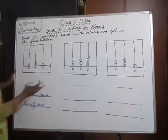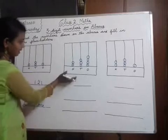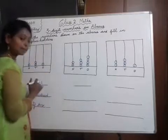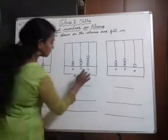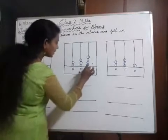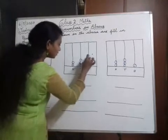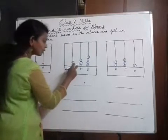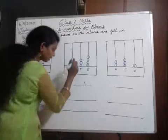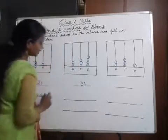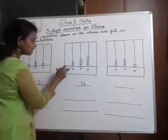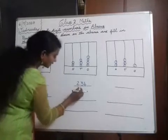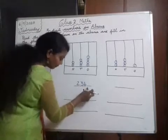Same, we have to do the next one also — the next Abacus. After seeing the Abacus, you have to write the number and the number name. First, in the 1s place, how many balls are there? 4. Write 4. Next, in the 10s place, how many balls are there? 3. In the 100s place, 2 balls are there, write 2. So the number is 234.